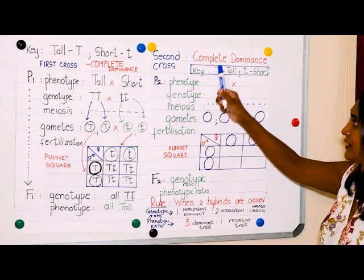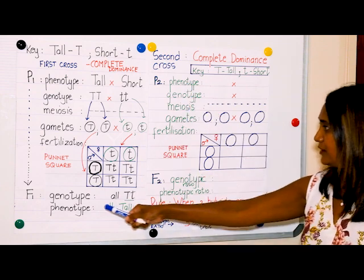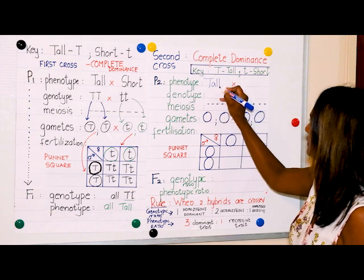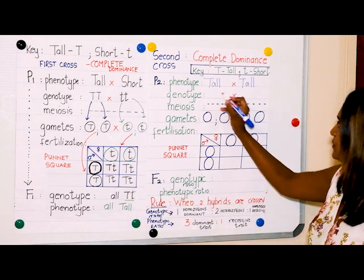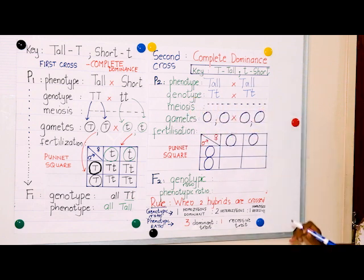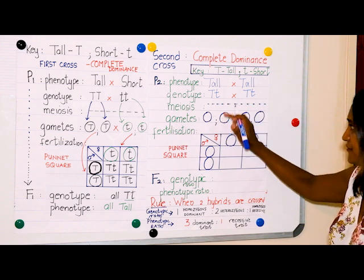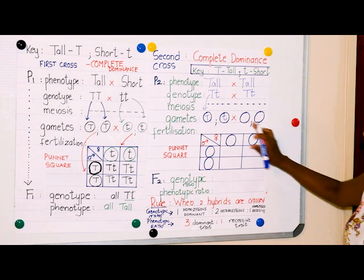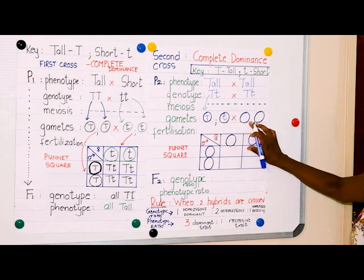We use the same key as before: capital T for tall and small t for short. Phenotype: we are using the F1 which were interbred or cross-pollinated, so it's tall times tall. Genotype: since the F1 offspring were interbred, they have the same genotype — heterozygous times heterozygous, capital T small t times capital T small t. After that, meiosis takes place, indicated with a broken line. Remember Mendel's law of segregation: during meiosis the two alleles coding for each characteristic separate into different gametes, and we separate them with a semicolon, and we separate the gametes of one parent from those of another parent with a cross.